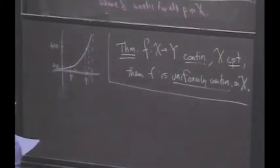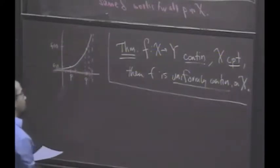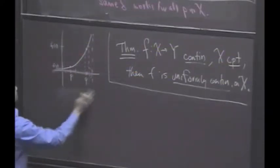I have uniform continuity whenever I have continuity on a compact set. Okay, so let's prove this fact. Let's prove this fact. How could I prove this fact? Let's see if we can develop an intuition for why it's true.